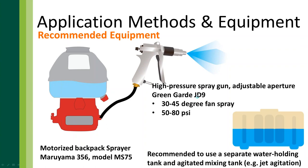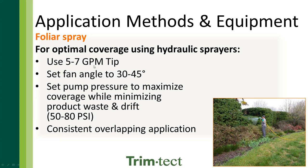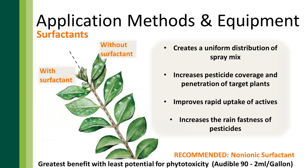For foliar application, use a 5 to 7 gallon per minute tip in your JD-9 or equivalent. Make sure your fan angle is at 30 to 45 degrees, and your pump is set to 50 to 80 PSI. When you spray, use a consistent overlapping application pattern — like you're painting shutters with spray paint. A nice overlapping, consistent pattern ensures even distribution over the entire plant. Another distinction: always add a non-ionic surfactant to the solution to create uniformity in distribution and help break up the surface tension of water droplets.